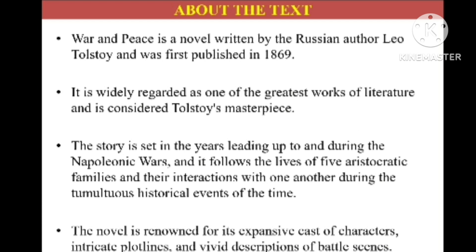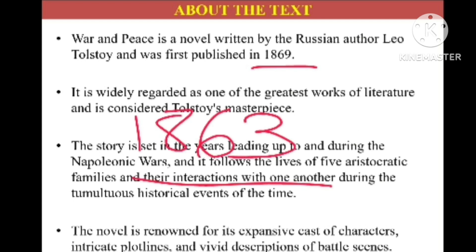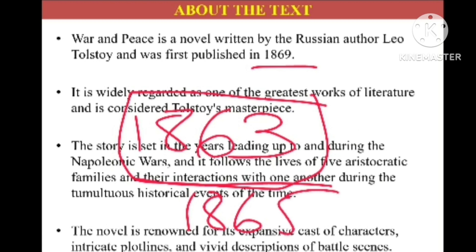War and Peace is a novel written by Russian author Leo Tolstoy. Leo Tolstoy also wrote Anna Karenina, where he focused on themes related to aristocrats and their immoral activities. The novel was published in parts — it started in 1863, the first edition was published in 1865, it was revised in 1867, and the full volume was finally published in 1869.